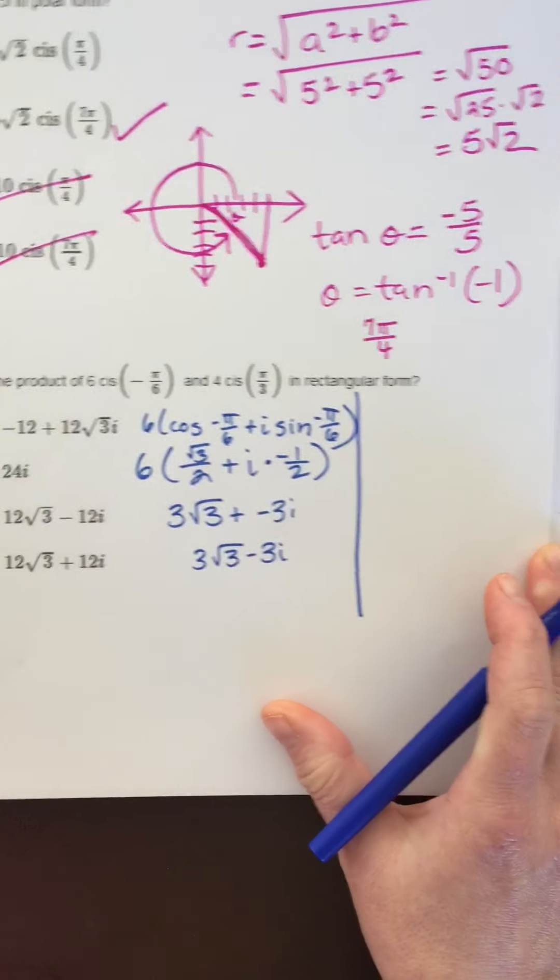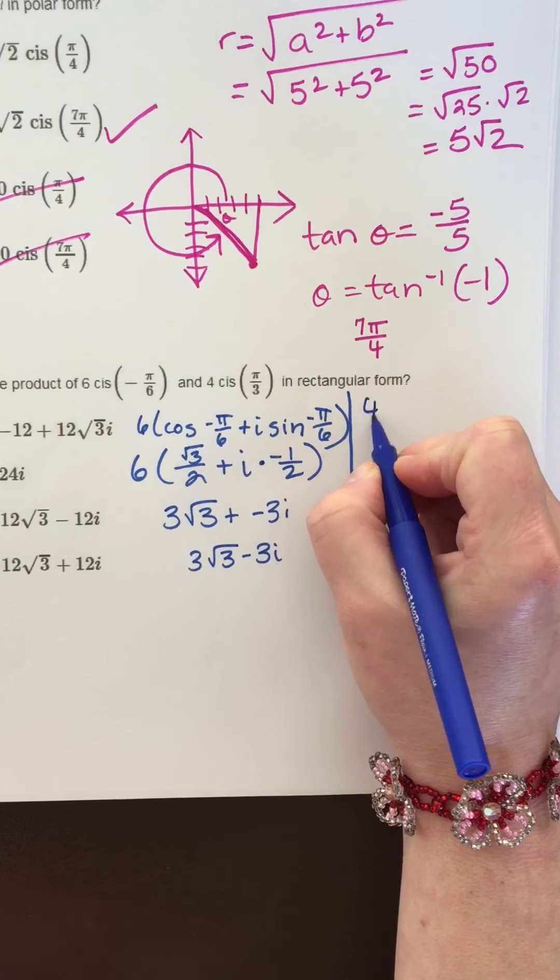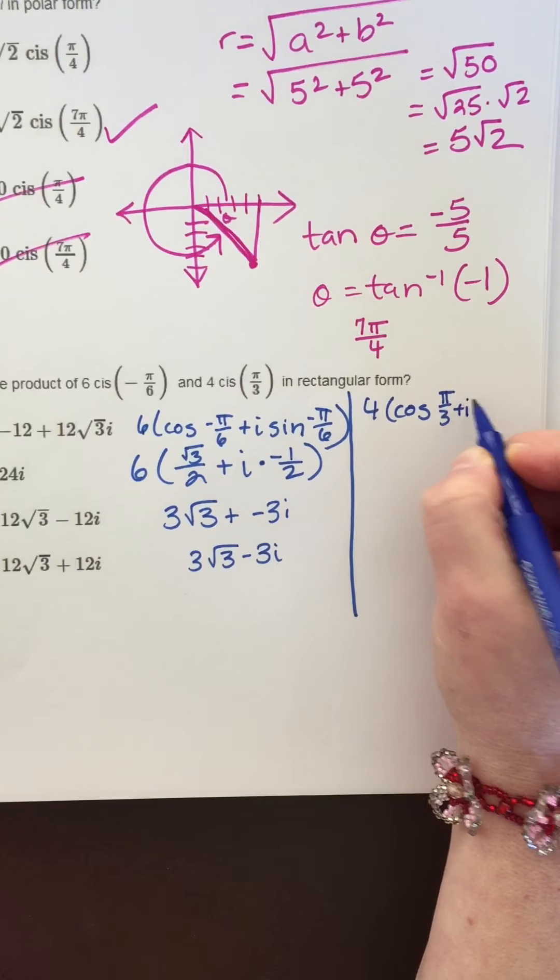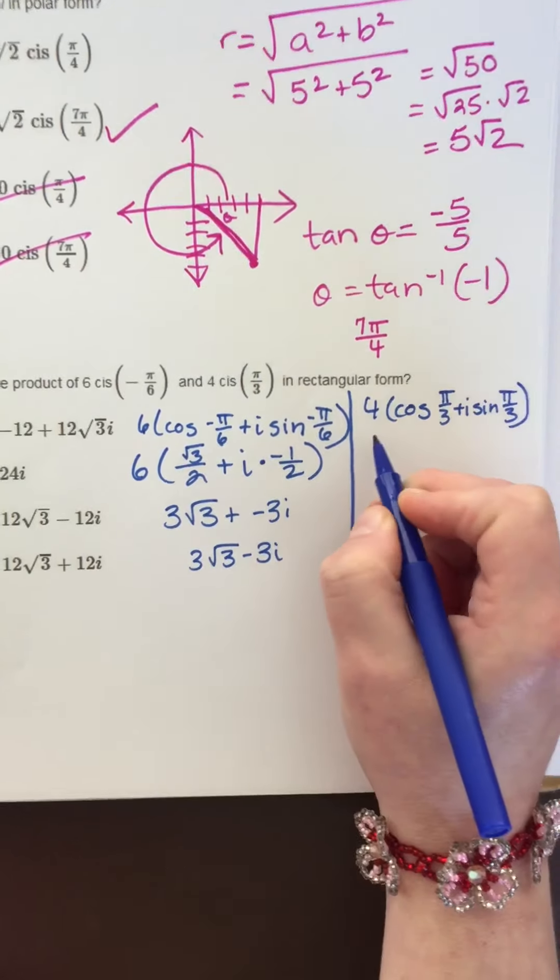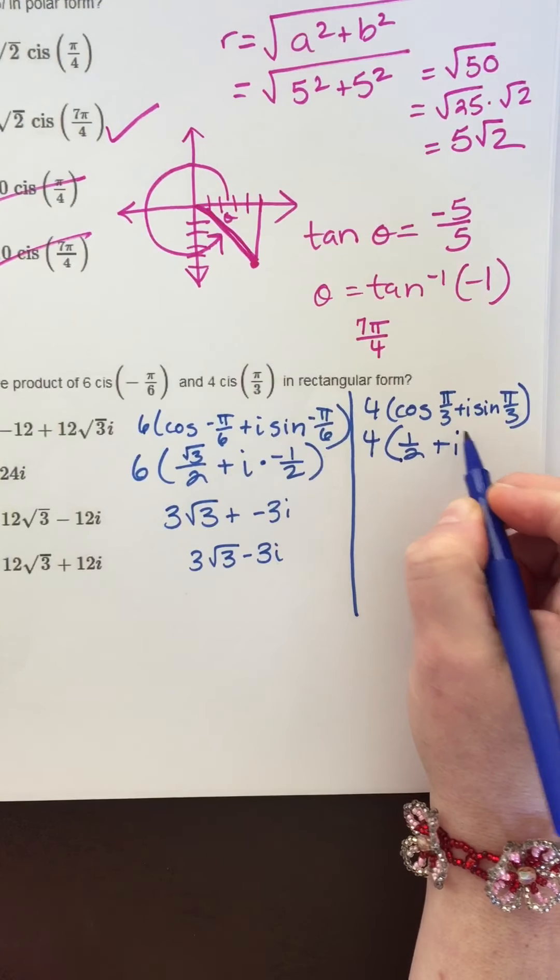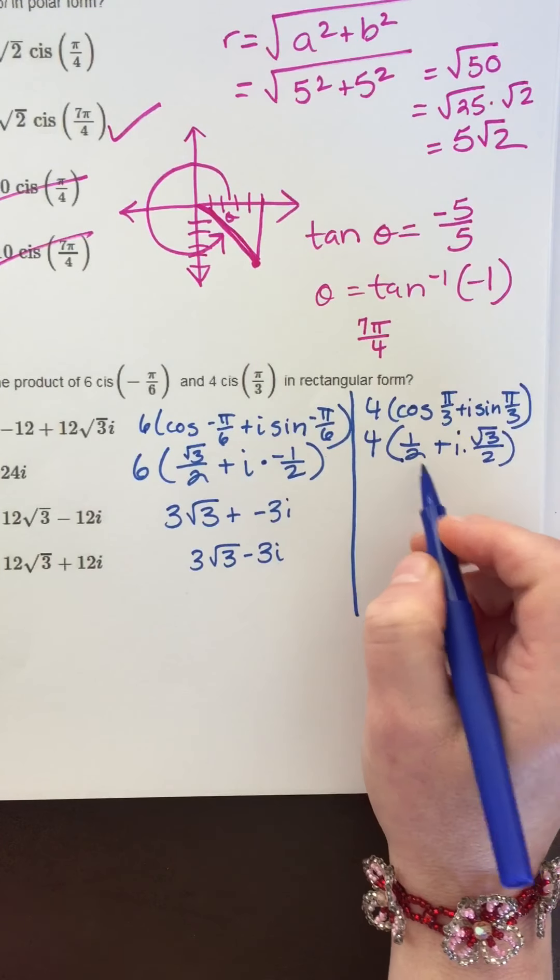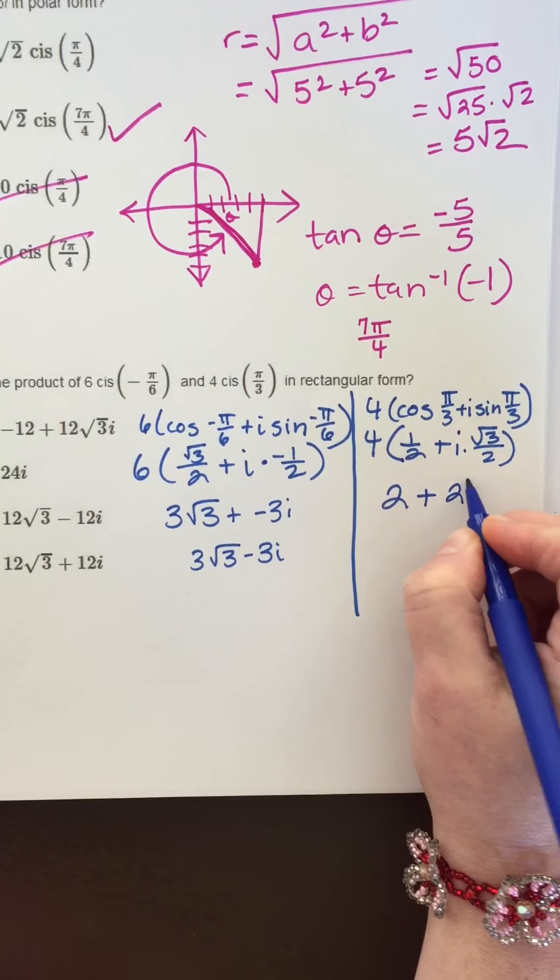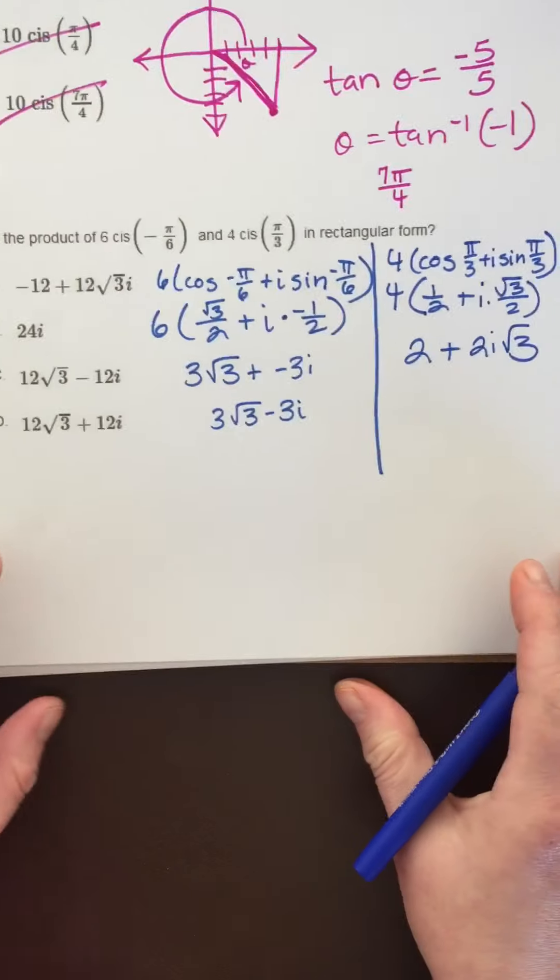Let's do the other one. For this one, you would have 4 times cosine of pi over 3 plus i times sine of pi over 3. The cosine of pi over 3 is one half, and the sine of pi over 3 is square root of 3 over 2. Distribute the 4. A half of 4 is 2, two goes into 4 two times. I'm going to multiply those things.